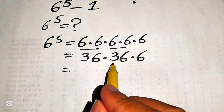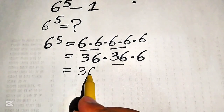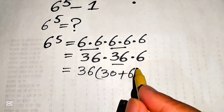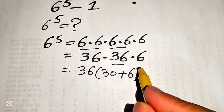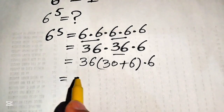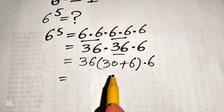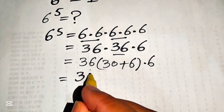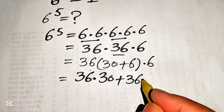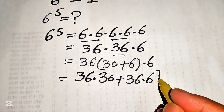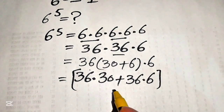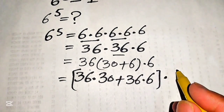First we break this value and write 36 as 30 plus 6, and at the last we multiply this number with 6. So now we multiply 36 on both of these values, and it will be written as 36 multiplied by 30 plus 36 multiplied by 6, and the resulting answer is then multiplied with 6.